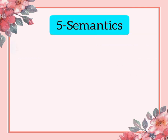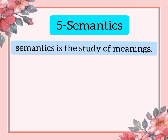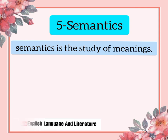Number five is semantics. In semantics we study the meaning of sentences — how a sentence is meant and perceived. It is the study of meanings. In semantics we only study meanings, such as synonyms and antonyms. We cannot study context in semantics — context is studied separately.